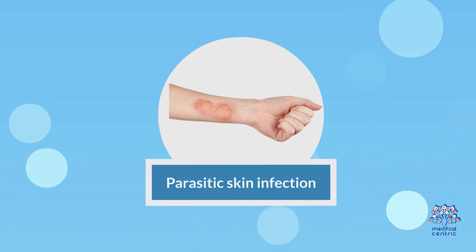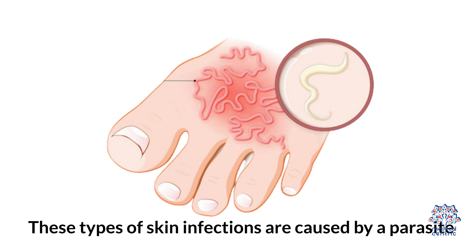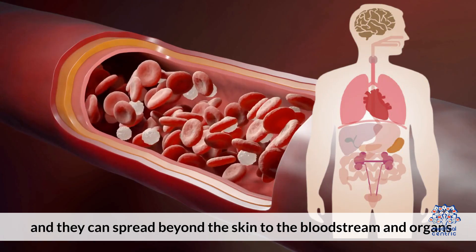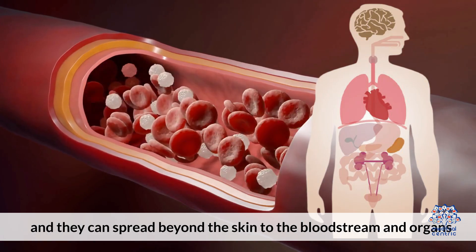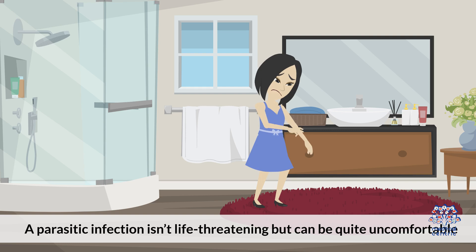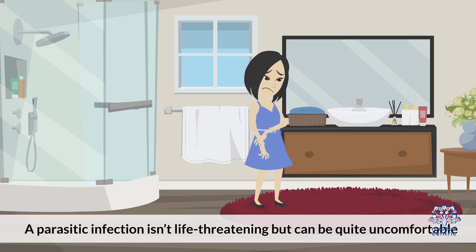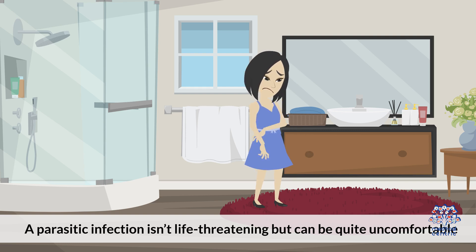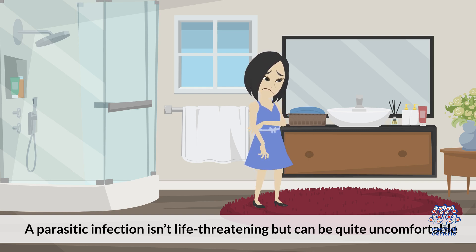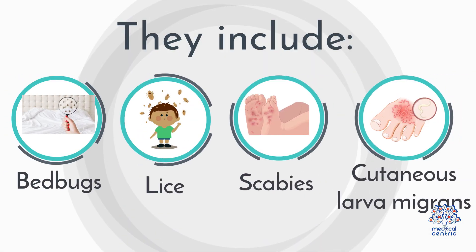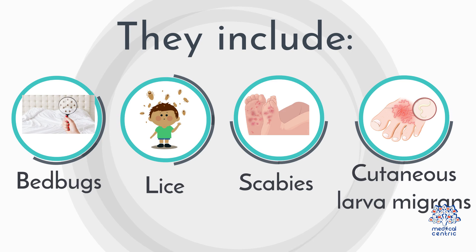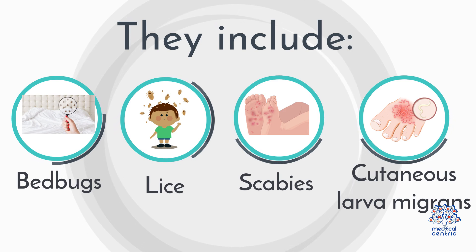4. Parasitic skin infections are caused by a parasite, and they can spread beyond the skin to the bloodstream and organs. A parasitic infection isn't life-threatening, but can be quite uncomfortable. Different types of parasitic skin infections include bedbugs, lice, scabies, and cutaneous larva migrans.